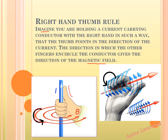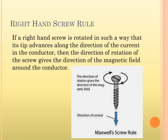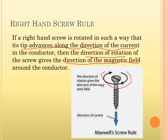The right hand screw rule can be used when a direction must be determined based upon a rotational direction, or vice versa. The rule states that if a right-hand screw is rotated such that its tip advances along the direction of the current in the conductor, then the direction you rotate gives the direction of the magnetic field — just like drilling a screw in the direction of the current.